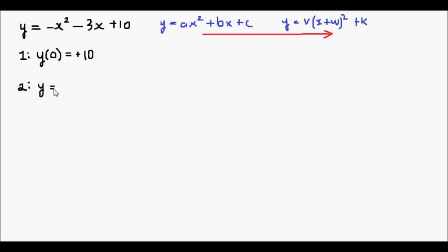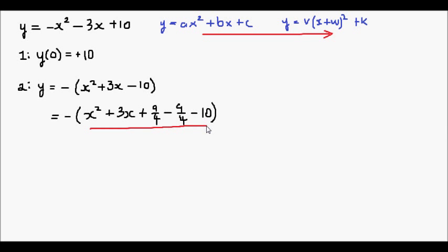First of all I'm going to factorize a negative out. So that will leave me with x squared plus 3x minus 10. Next thing I'm going to do is to add a number to this expression. I'm going to add 9 fourths. And if I add 9 fourths I have to subtract 9 fourths to maintain equivalency with the expression above. So satisfy yourself that this is equal to that as the 9 fourths cancel out.